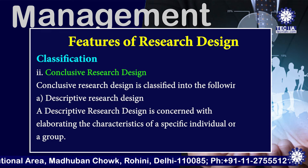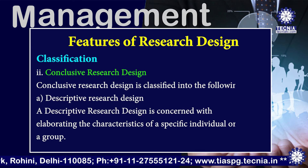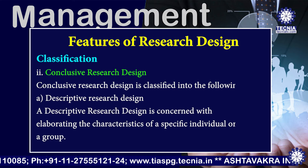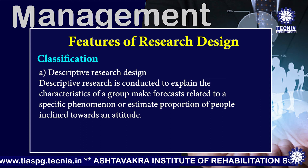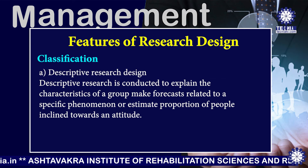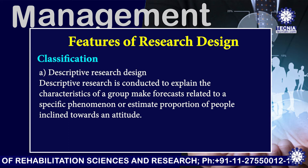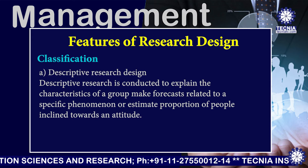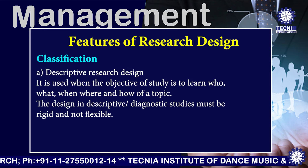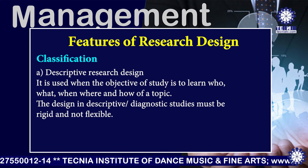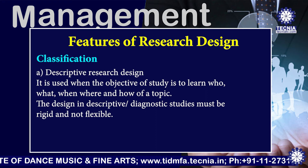Conclusive research design is classified into the following types. The first one is descriptive research design. A descriptive research design is concerned with elaborating the characteristics of a specified individual or group. Descriptive research is conducted to explain the characteristics of a group, make forecasts related to a specific phenomena, or estimate proportion of people inclined towards an attitude. It is used when the objective of the study is to learn who, what, when, where and how of a topic. The design of descriptive or diagnostic study must be rigid and not flexible.